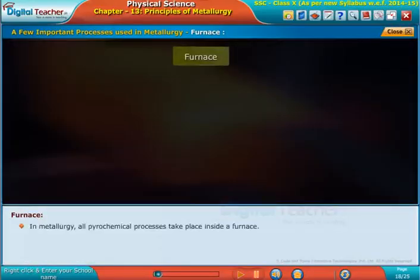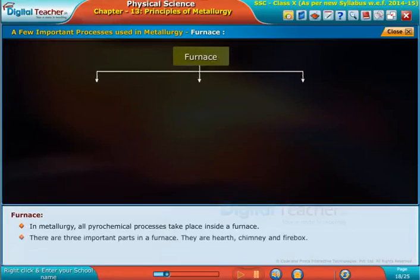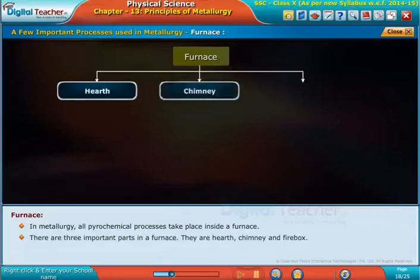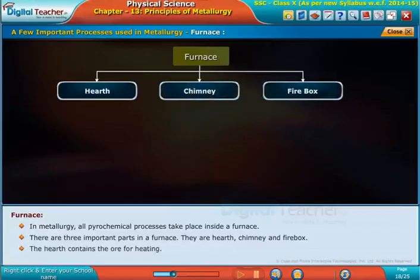In metallurgy, all pyrochemical processes take place inside the furnace. There are three important parts in a furnace: hearth, chimney, and fire box. The hearth contains the ore for heating. The chimney is the outlet for the waste gases to leave the furnace.